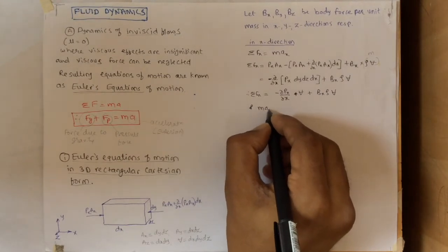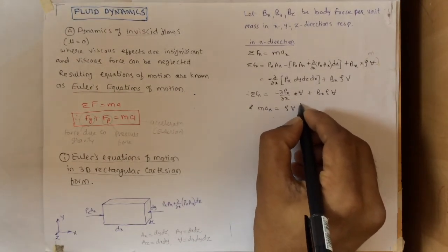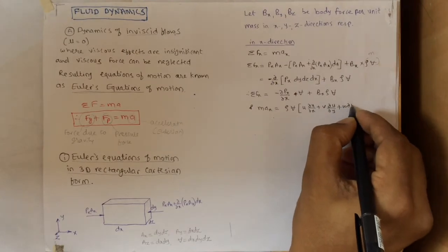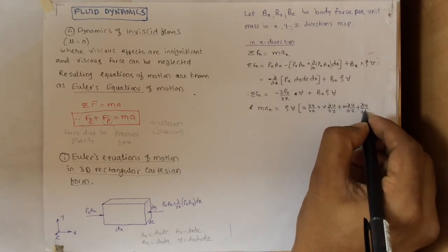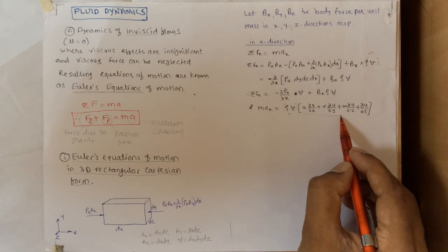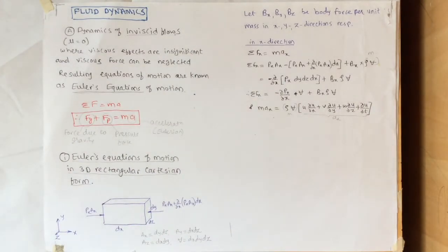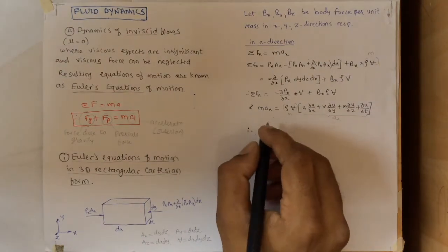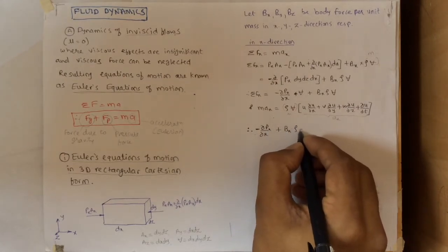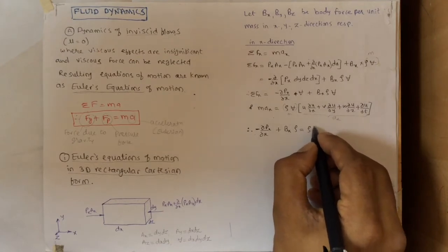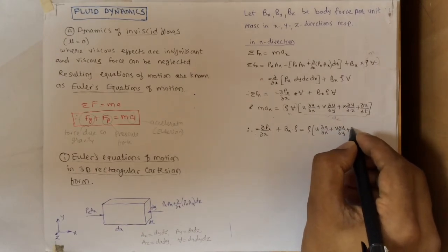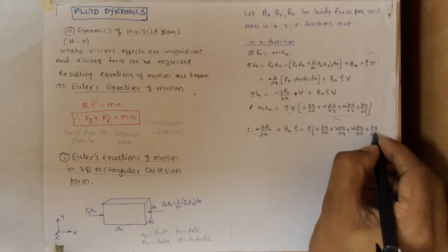For mass times acceleration: mass is rho·V, and the acceleration in x is the Eulerian acceleration: u·∂u/∂x + v·∂u/∂y + w·∂u/∂z + ∂u/∂t. Here rho times volume is the mass, and the four terms represent acceleration in the x-direction, comprising convective plus local acceleration. After combining this in Newton's law and canceling the volume term from each side, we get: −∂P/∂x + bx·ρ = ρ·(u·∂u/∂x + v·∂u/∂y + w·∂u/∂z + ∂u/∂t).